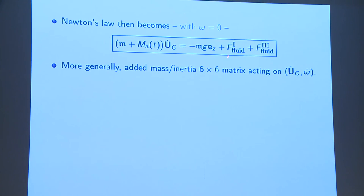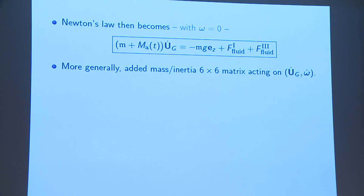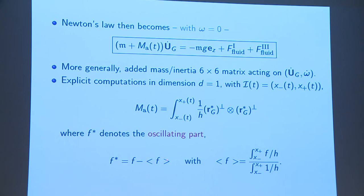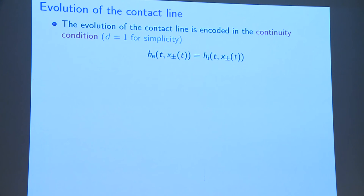In the end, you can rewrite the equation as (m plus a positive matrix) times dot_u equals the rest of the forces. In general, if you have angular velocity, you have a 6 by 6 added mass-inertia matrix which is positive. In dimension 1, you can make explicit computations. The interior region is just an interval [x_minus, x_plus], and the added mass matrix can be computed: it is the square of the oscillating part of the function defined in the interior region. To define the oscillating function — removing its average — the average is the integral from x_minus to x_plus of f over h divided by the integral of 1 over h. This is a kind of weighted average, so it is explicit and you can do things very easily.